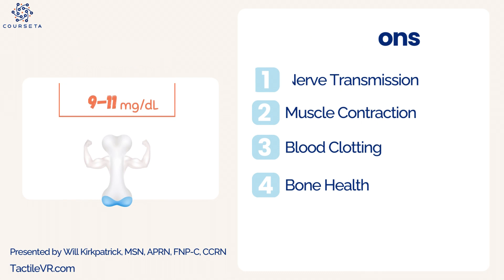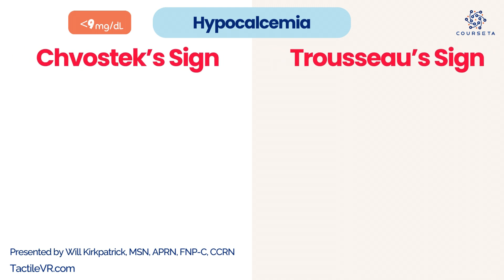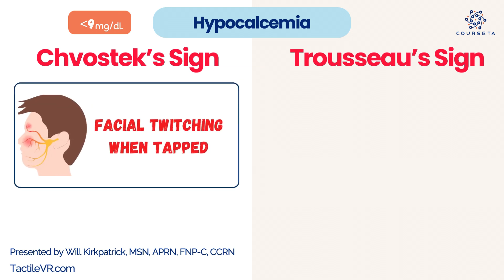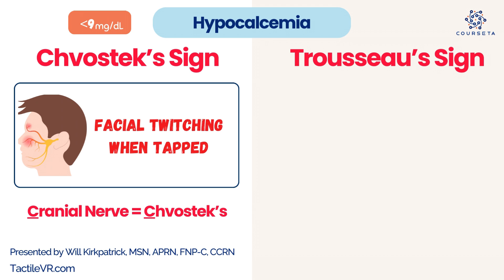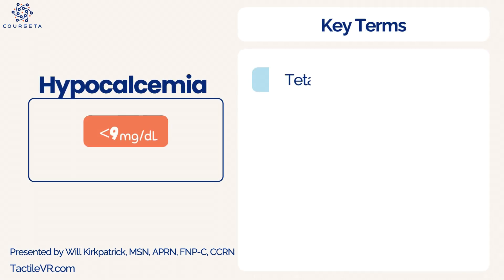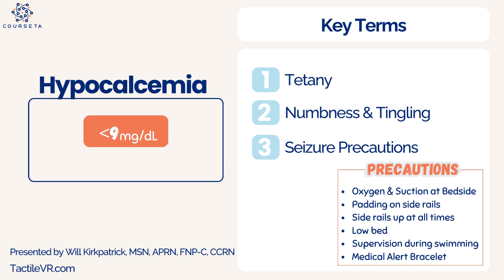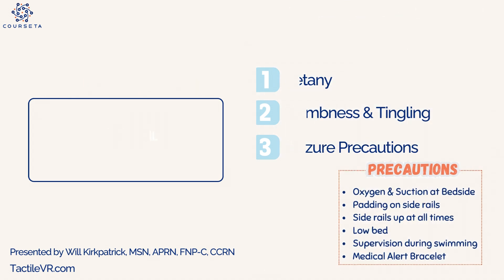Next is calcium, which — like potassium — functions in muscle contraction and nerve conduction. Hypocalcemia is less than 9. The most frequently questioned signs and symptoms are Chvostek's sign and Trousseau's sign. Chvostek's sign is facial twitching when you tap the facial nerve (cranial nerve). Trousseau's sign is flexion of the wrist when you inflate a blood pressure cuff due to irritated nerve conduction. Other key findings include tetany, numbness, tingling (paresthesia), and seizure risk — so hypocalcemia patients must be on seizure precautions.